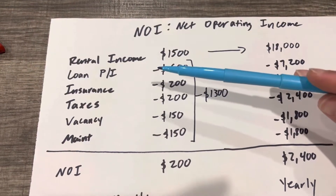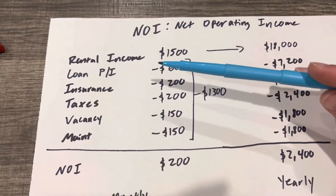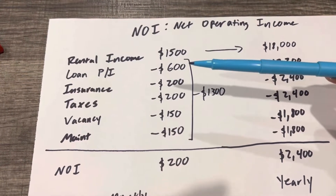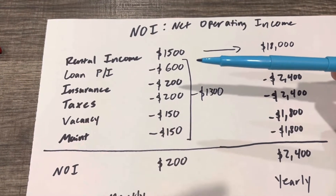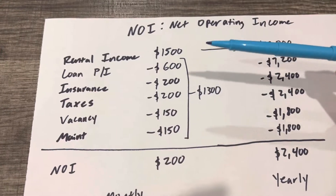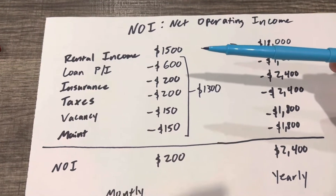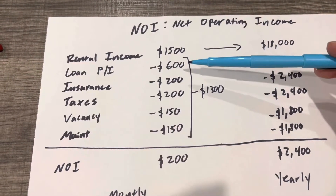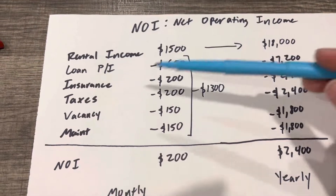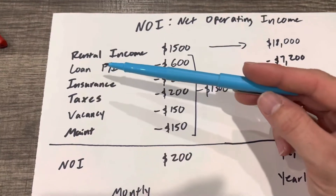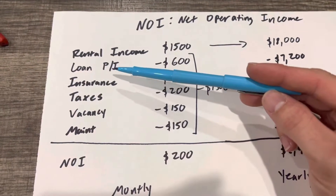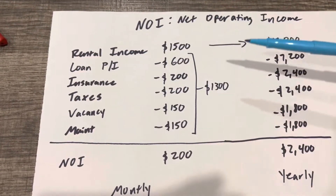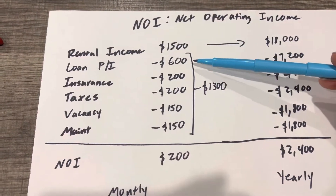We have it leveraged because we already talked about how powerful leverage can be for appreciation, debt pay down, and all those things. So we have a loan, and our P&I — our principal and interest payment — is $600.